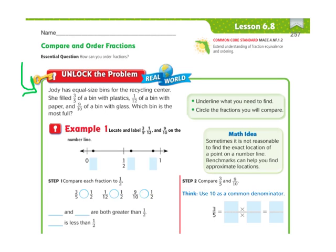It says Jodi has equal size bins for the recycling center. The first way they say to do this is to locate and label three-fifths, one-twelfth, and nine-tenths on a number line. Whichever one ends up furthest along the number line would be your greatest. To compare them, you'd fill in the other two spots with the other two fractions and put them in order. So the one-twelfth is here, the three-fifths is here, and the nine-tenths is here.